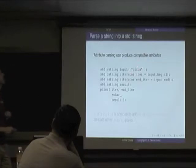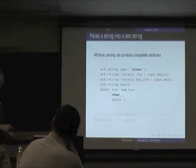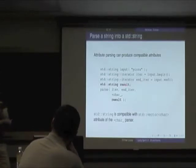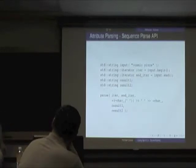I want to parse 'pizza' using kleene star with a character. Character with kleene star exposes a vector of characters. But I want to stick this inside a string — and it just so happens that a string is compatible with a vector of characters. So I've parsed 'pizza' into result.